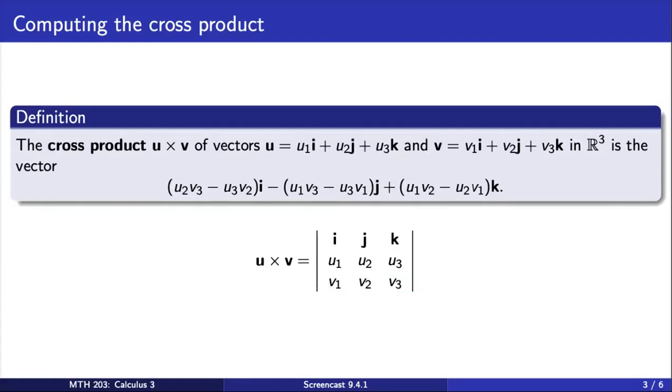The order in which we arrange the matrix does matter. Also, the fact that u is the first vector written in the cross product tells us that the components of u are placed in the second row, while the components of v are placed in the third row.